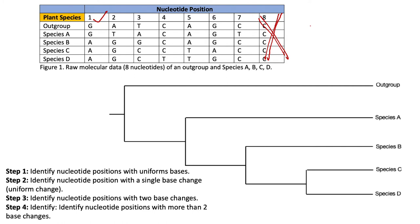At position one we are going from G to A. When plotting this tree, we compare the outgroup to all other species. Species B, C, and D are all going from G to A, meaning they share a common ancestor where that change occurred. So we plot that change at their common ancestor node: at nucleotide position one, going from G to A. That is our first plotted change.